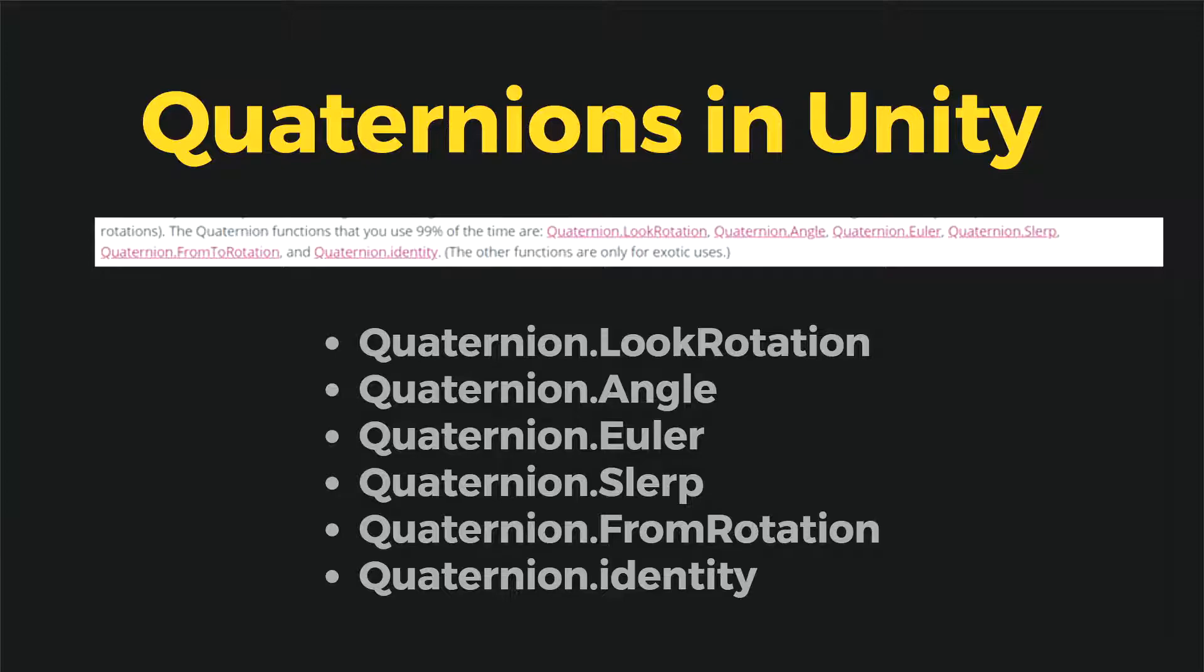As we can read in the documentation, there are only a couple of methods in the quaternion class that are responsible for 99% of the code we write. So let's talk about how they work.